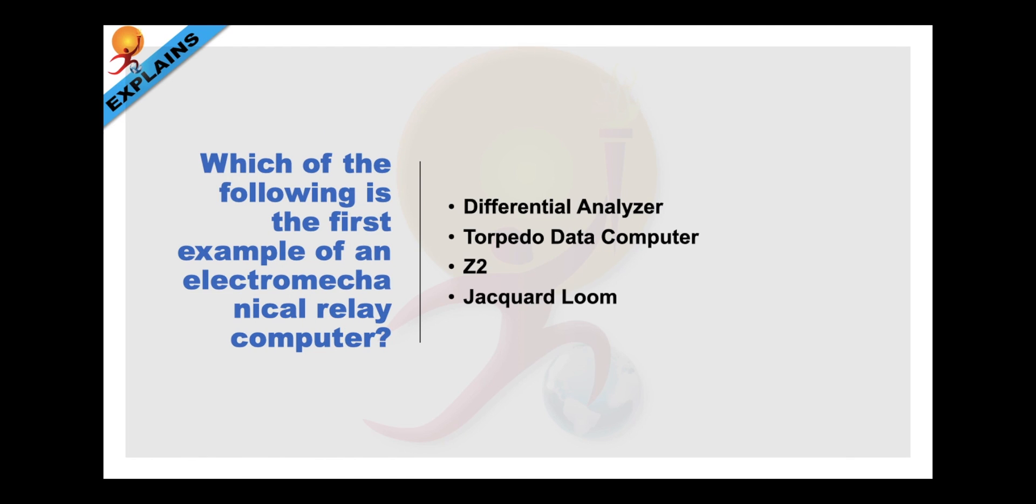Which of the following is the first example of an electromechanical relay computer? The Z2, created by German engineer Konrad Zeus in 1939, was one of the foremost example of an electromechanical relay computer. So answer is 3.